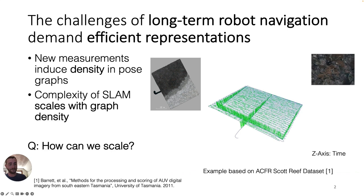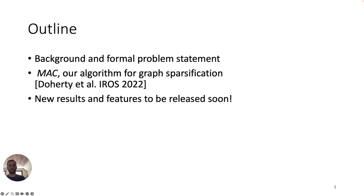In this talk, I'll provide background on the problem of graph sparsification and formalize it using ideas from spectral graph theory. I'll present our algorithm MAC, originally presented at IROS 2022, which efficiently computes sparse subgraphs that preserve specific connectivity properties of the original graph. MAC operates on any graph — it's not tailored specifically to SLAM. Finally, I'll give some exciting new results and mention that the MAC algorithm is already available through a Python library, with a link at the end of the talk.